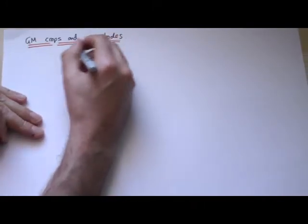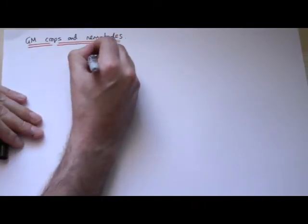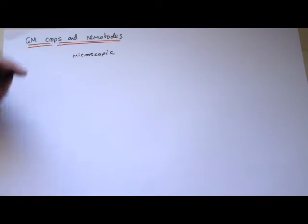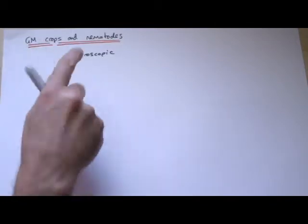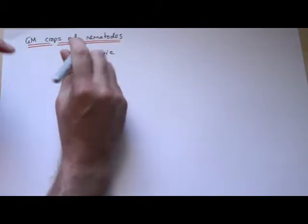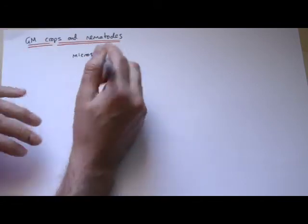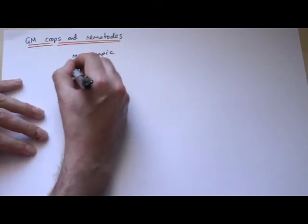Nematodes are worms, they are a type of worm, very small, and they are actually a type of roundworm. So they wouldn't quite look like the worms that you maybe think of as earthworms, but they are worms nonetheless.